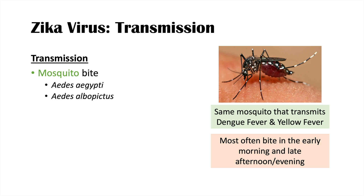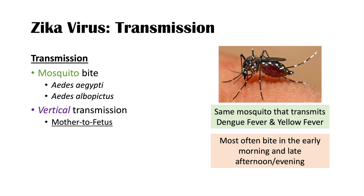There is a period during midday and at night when these mosquitoes are less likely to bite, though they can still bite at those times. The virus can also be transmitted vertically — meaning from parent to child, and specifically from mother to fetus — which is where it becomes most important pathologically.